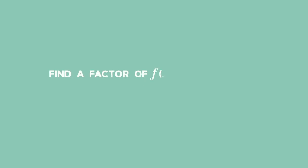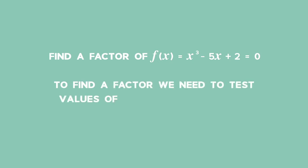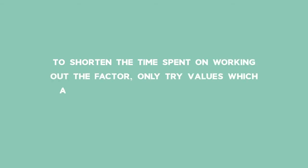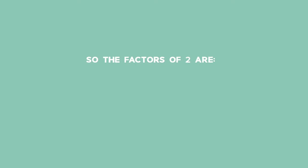Step 1: Find the factors of f of x equals x cubed minus 5 times x plus 2 which equal 0. To find a factor, we need to test values of x equal to a such that f of a equals 0. To shorten the time, only try values which are factors of the constant term — in this case positive 2. So the factors to try are negative 1, positive 1, negative 2, and positive 2.